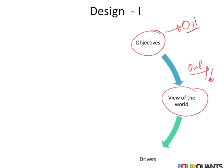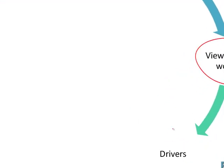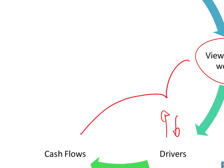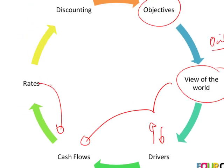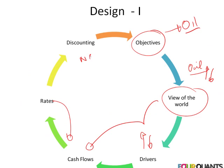I take this view of the world and determine: what are the drivers that will lead to prices going up or down? How do these drivers affect the cash flows of my model? The view of the world and the drivers together determine how cash flows would change. If there are any applicable rates that impact my cash flows, how would those rates change? And then finally, bringing it all together to calculate the net present value, or NPV.